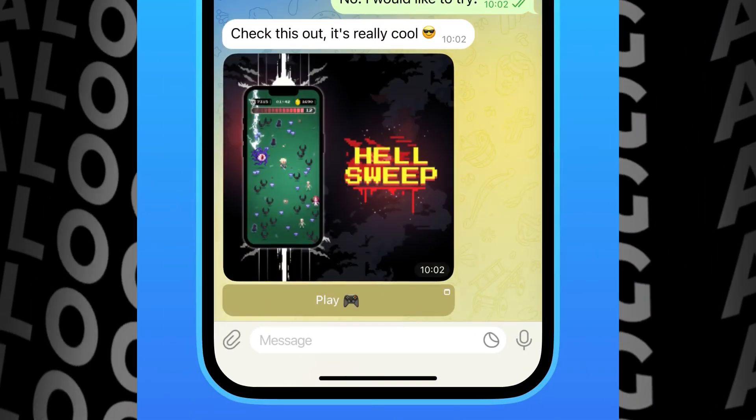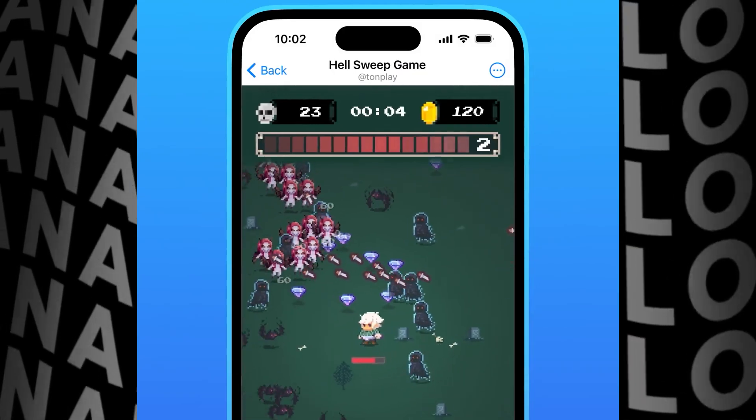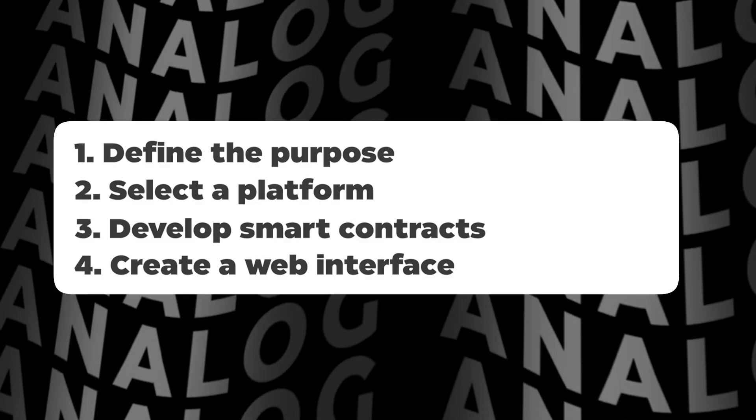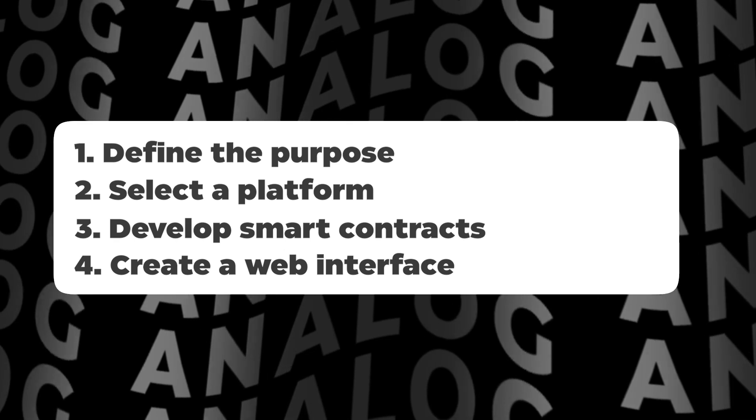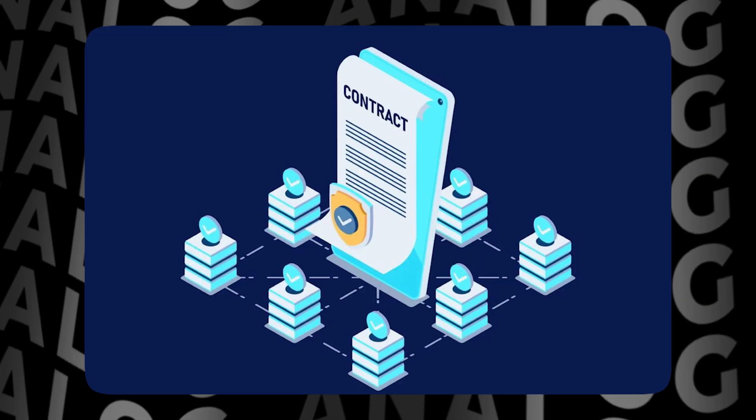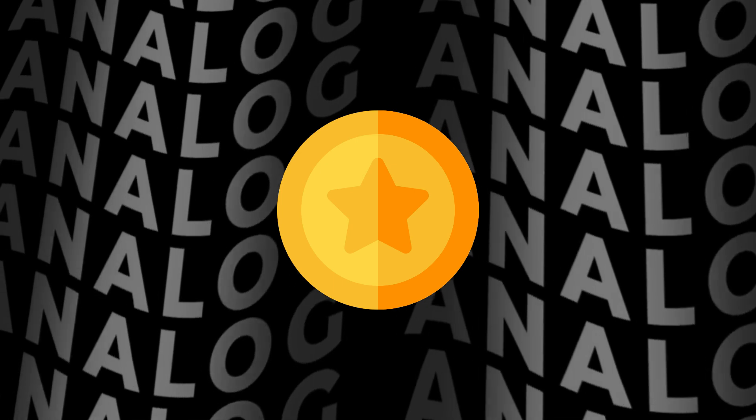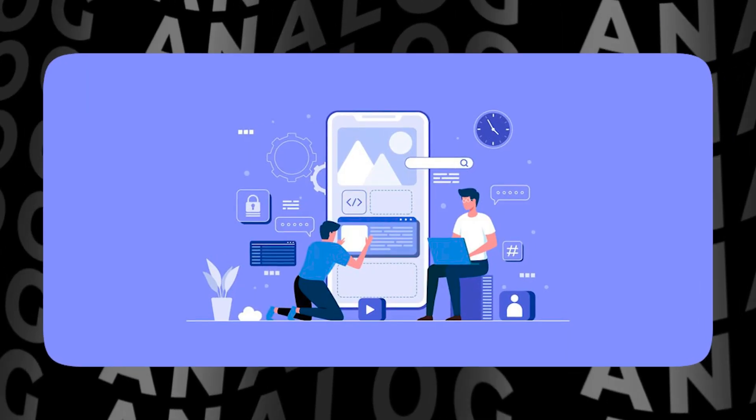We described TON in detail in a separate video — be sure to watch it, especially if you plan to launch a Web3 application with blockchain integration. To integrate Telegram mini-apps and Web3, since mini-apps are essentially regular web apps, you first need to create a Web3 application and go through all stages of development: think through tokenomics, write smart contracts, launch your token or take an existing one, and develop your application. It is important that your token must be on the TON blockchain, as well as all smart contracts.